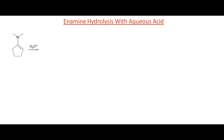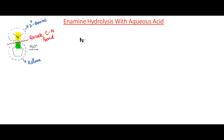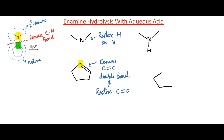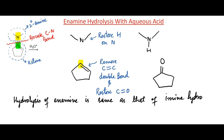Let us discuss hydrolysis of enamine with aqueous acid. The nitrogen lone pair is in resonance with the C-C double bond — this part comes from secondary amine and this part from ketone. To find the hydrolysis products, break the C-N bond. Restore hydrogen on nitrogen to give dimethylamine. Then remove the C-C double bond and restore the C=O double bond to give cyclopentanone. Thus hydrolysis of enamine is the same as imine hydrolysis, following PAD-PED steps.